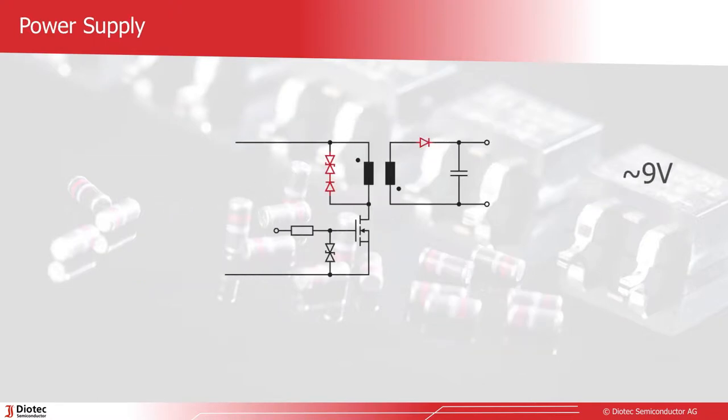The 9 volts are usually generated by a flyback converter. For the output Schottky, the SKL16 in SOD123 is a potential candidate. The SDB160WS in the tiny SOD323 allows for even more space savings. Both nominally offer 1 amp and 60 volts.